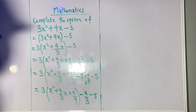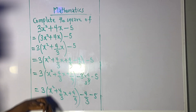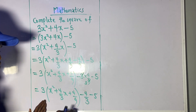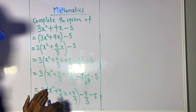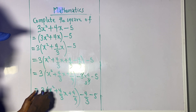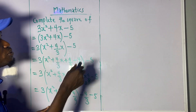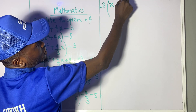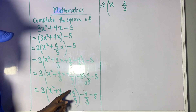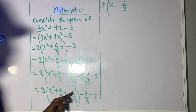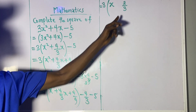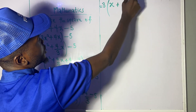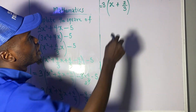What we have inside the bracket is a perfect square. How do we know what linear expression expands to give this? Take the square root of the first term — square root of x² is x. Take the square root of the last term — square root of 4/9 is 2/3. Copy the sign in between, which is plus. So the perfect square is (x + 2/3)², and we square it. So we now have 3 times (x + 2/3) squared.